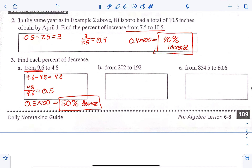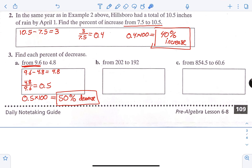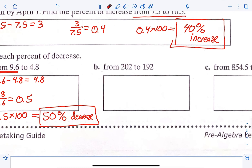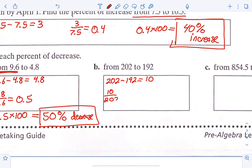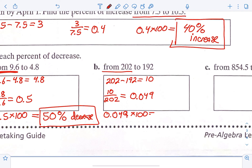Go ahead and pause your video and do B and C on your own, then we'll come back together and check them. For B, what we did was 202 minus 192, which was 10. 10 over 202 because it said 'from 202.' When we did that division, we got 0.049. 0.049 times 100 gives 4.9%. It is a decrease because our numbers are getting smaller from 202 to 192.